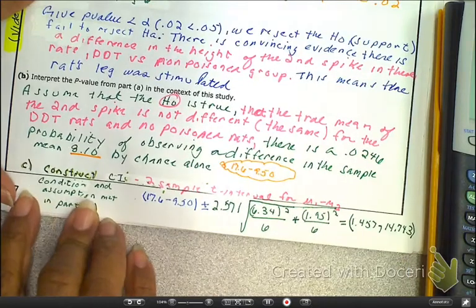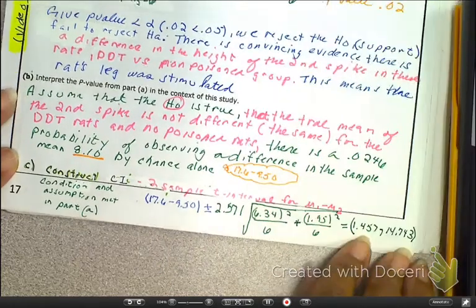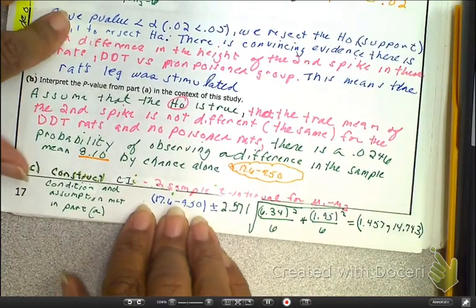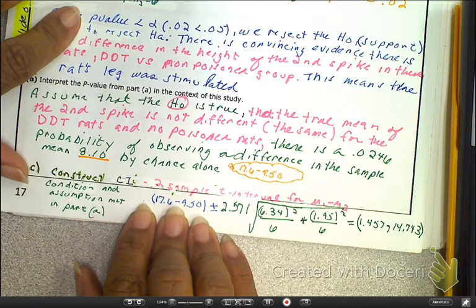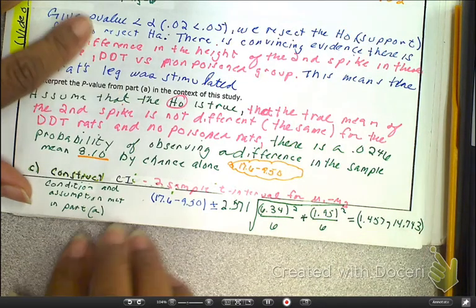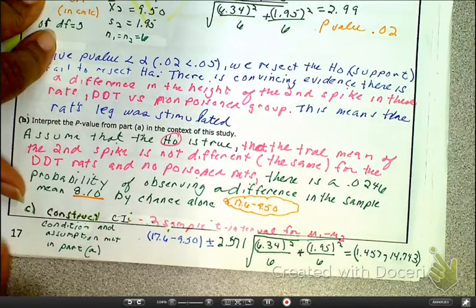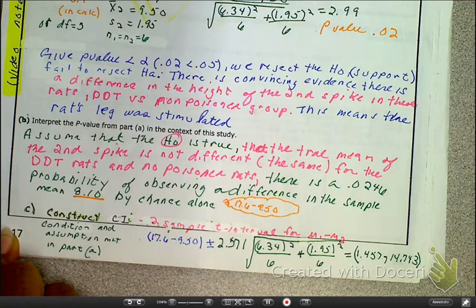And I'm just going to say the bottom part verbally, because I don't have any room to write it. So we are 95% confident that the true mean difference in the height of the second spike in the rats given the DDT versus the non-poison, or I should say the control group, lies within the interval of 1.4 to 14.7. Okie dokie. TTFN. Ta-ta for now. Peace out. I've got a raspy voice. Oh well. Bye-bye.